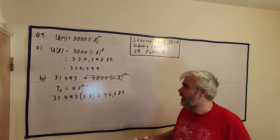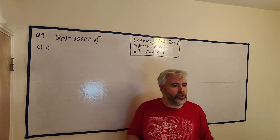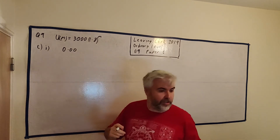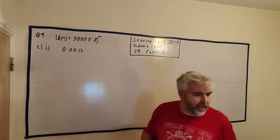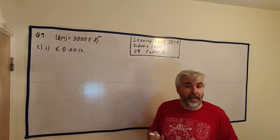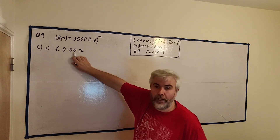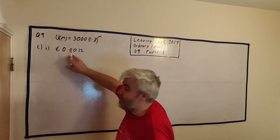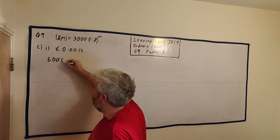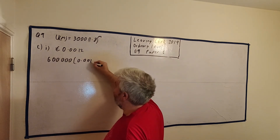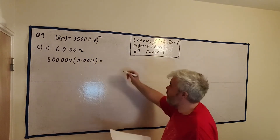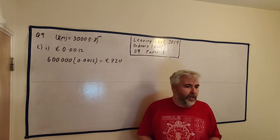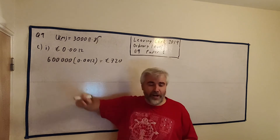Part C, part 1 asks how much she would earn in a month when there were 600,000 registered users. They tell us she earns 0.0012 euro for every user every month — that's less than one penny, about 0.12 of a cent. So to find how much she earns, we simply do 600,000 multiplied by 0.0012, which equals 720 euro. That's how much she'll earn in a month where 600,000 people are on the site.